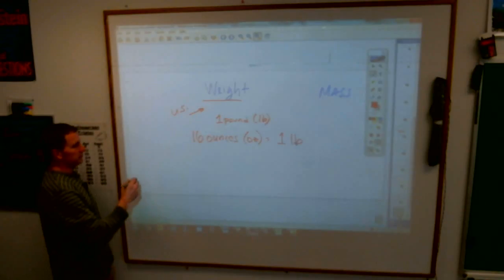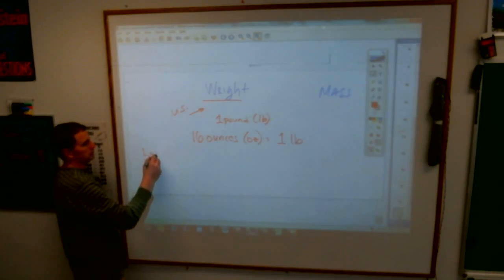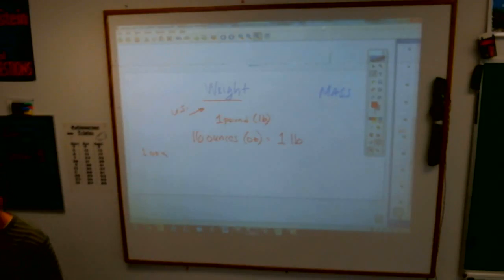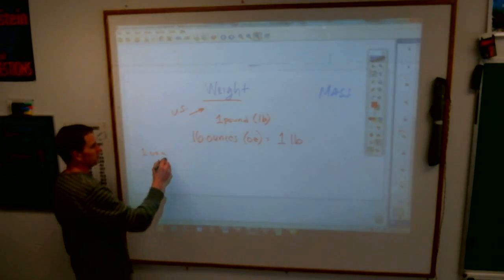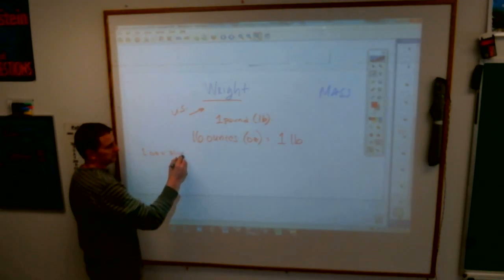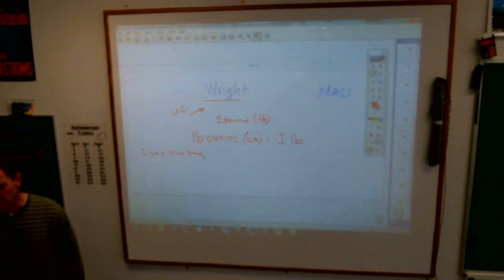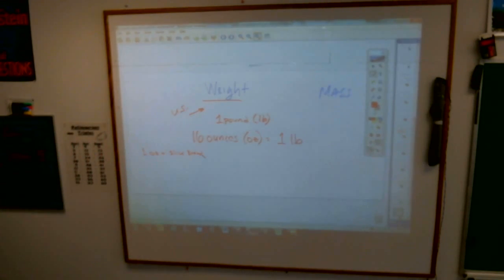What's something that weighs about an ounce? I don't know if the book tells us any of these things. One slice of bread. How about that? One ounce is a slice of bread. Sometimes they said, like, a mouse, for those of you that carry around mice all the time. A shoe weighs about a pound.